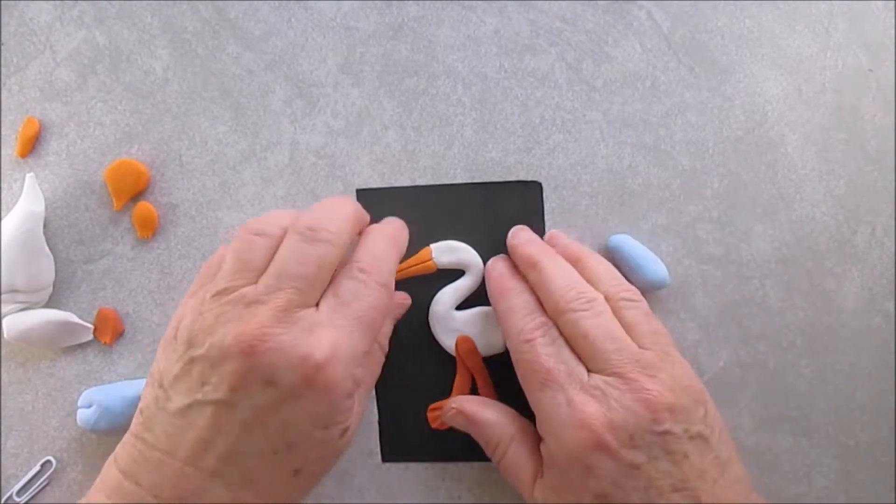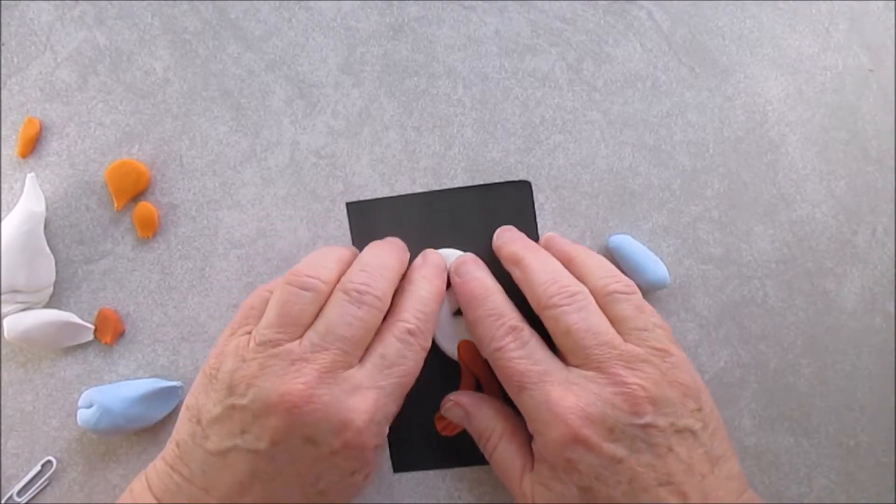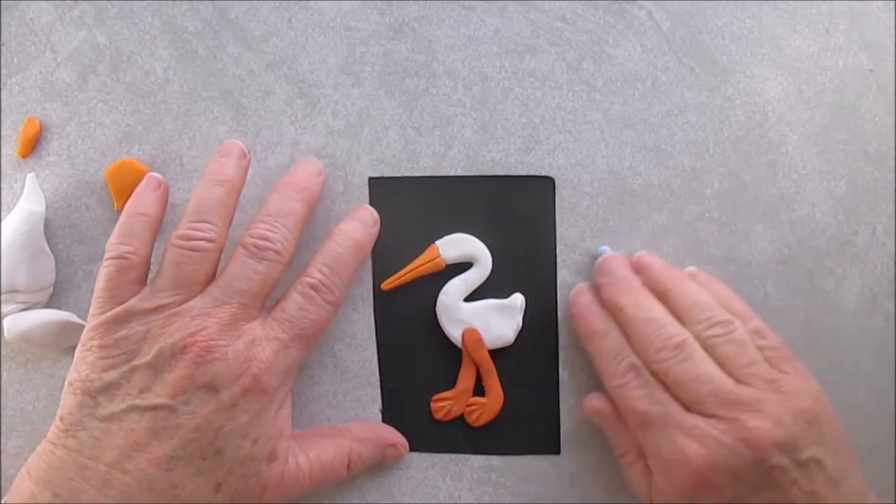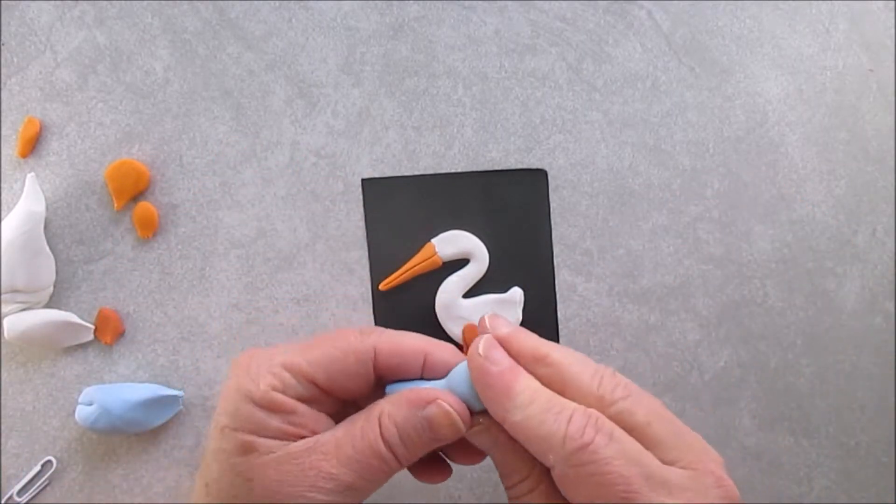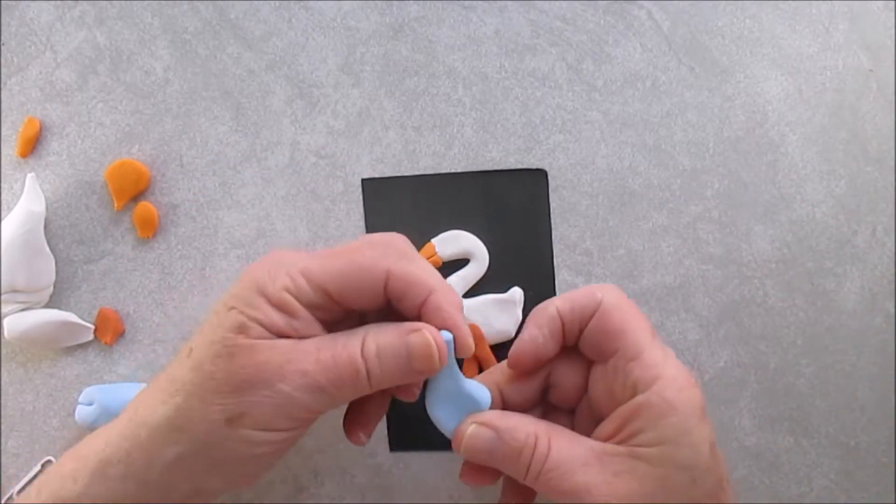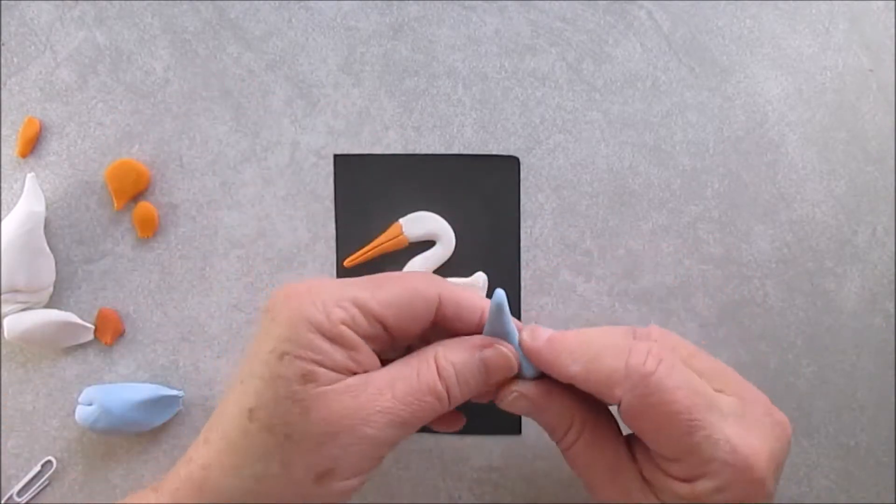Now this is going to be the blanket that the baby's wrapped in. I made it go over the top of his beak, but if you want to open up his beak and have it like in his mouth, you can do that also.